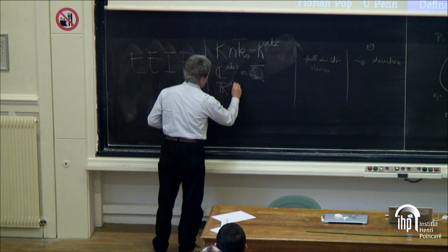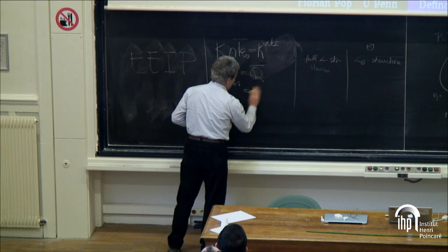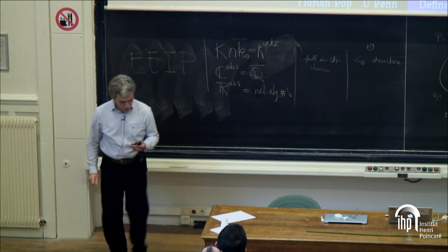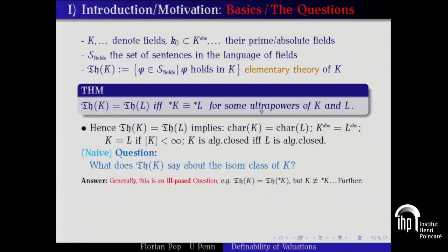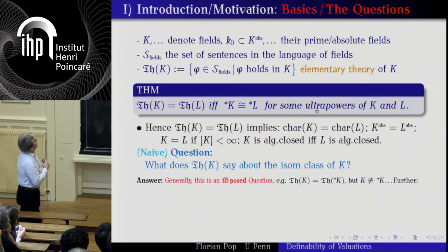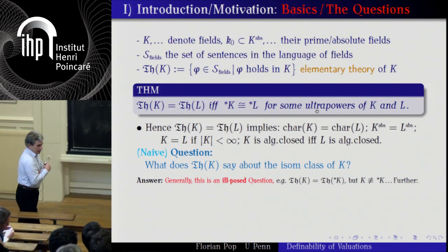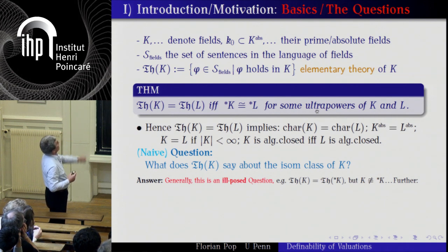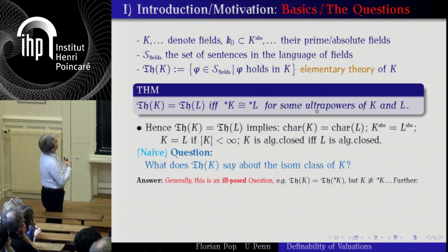And the absolute of the reals is the real algebraic numbers. S is the set of all sentences in the language of fields — I won't debate the language of rings where you add something for the invertibility. The elementary theory of K is the set of all sentences which are true in K. This is a theory right at the beginning of all model theory. Namely, if two fields are elementary equivalent — they have the same elementary theory — that is true if and only if they have ultrapowers which are isomorphic.